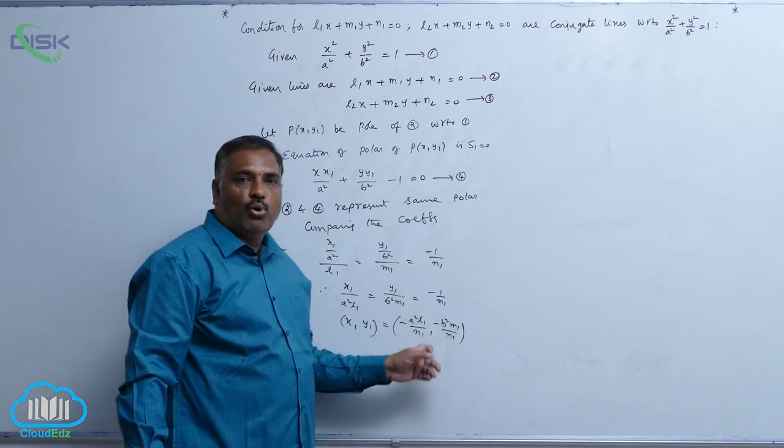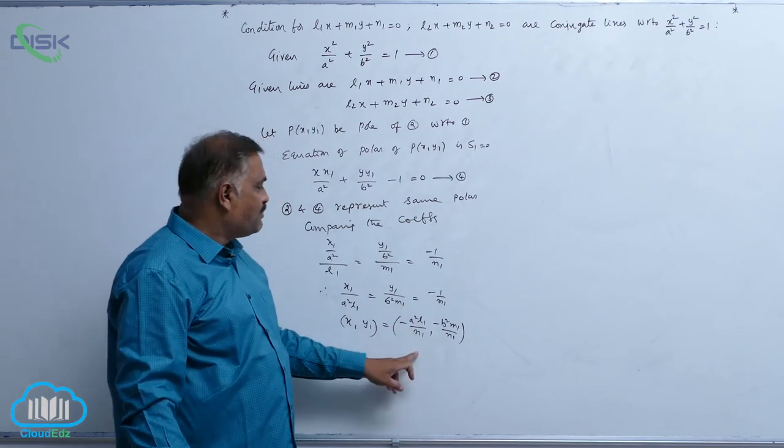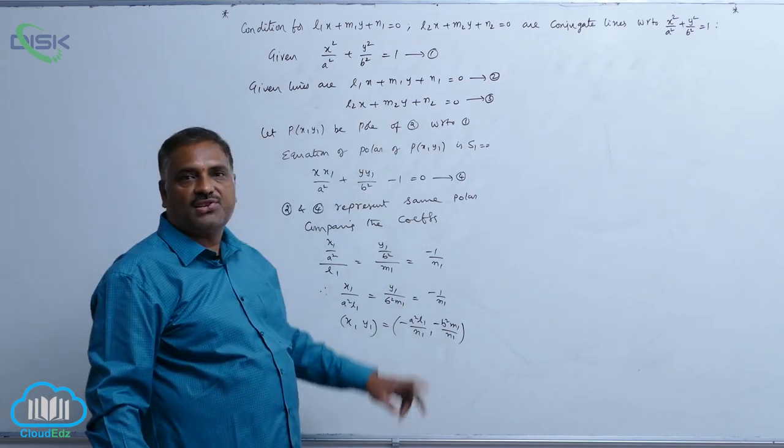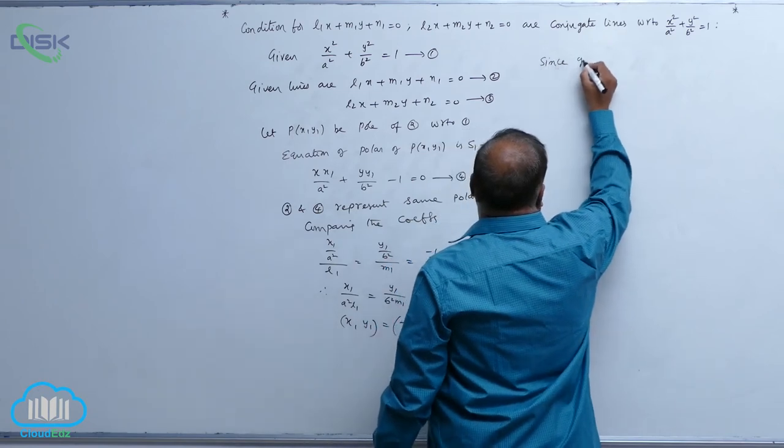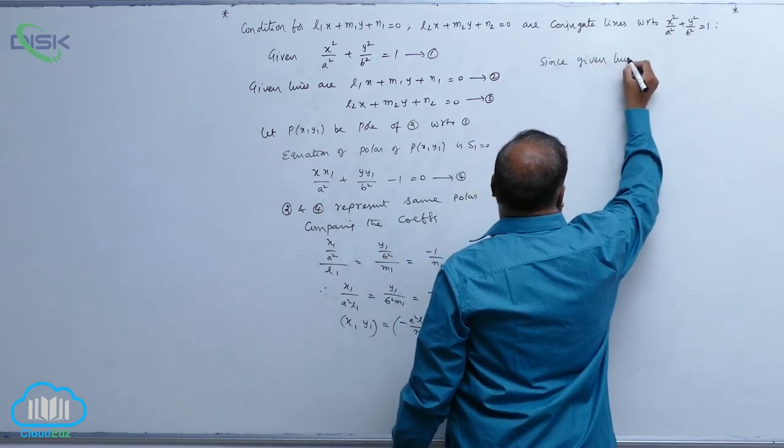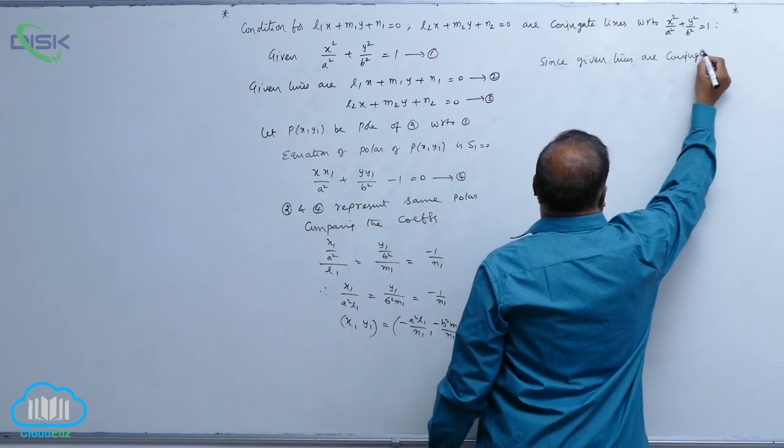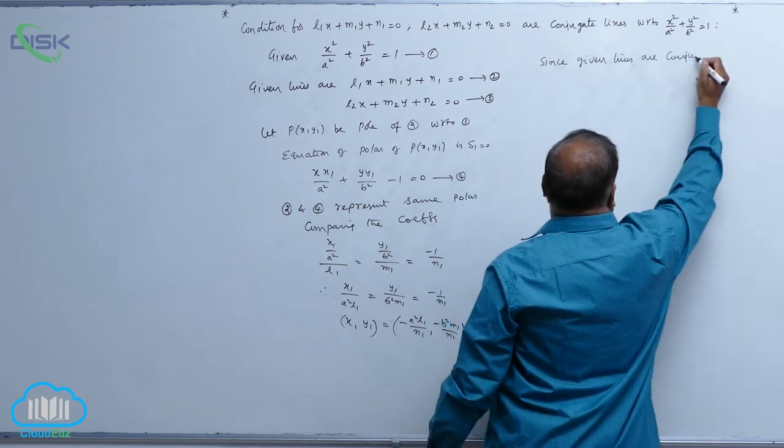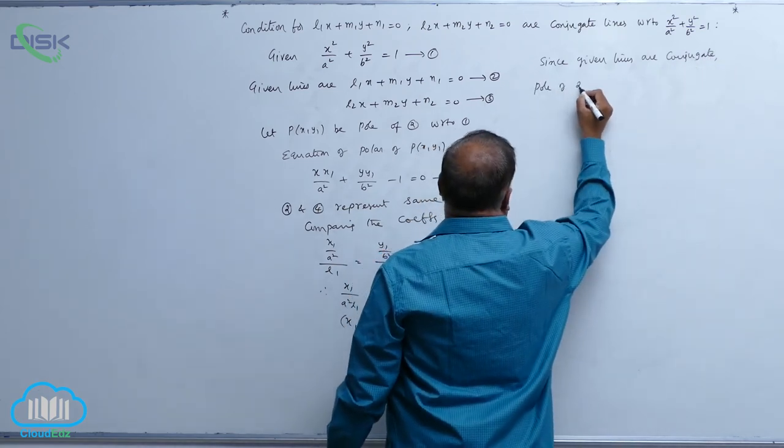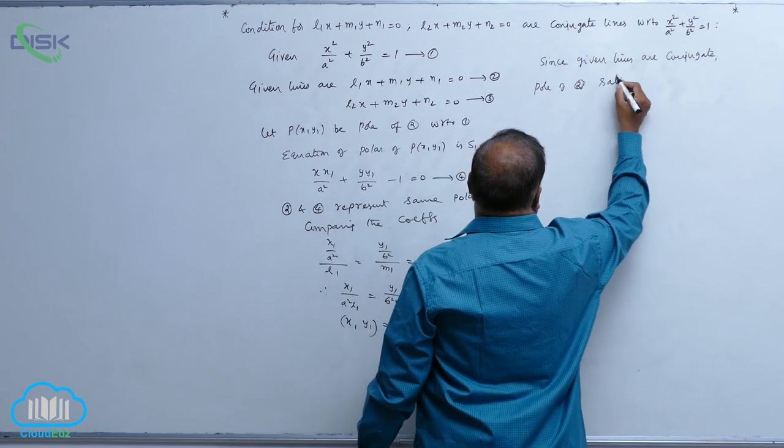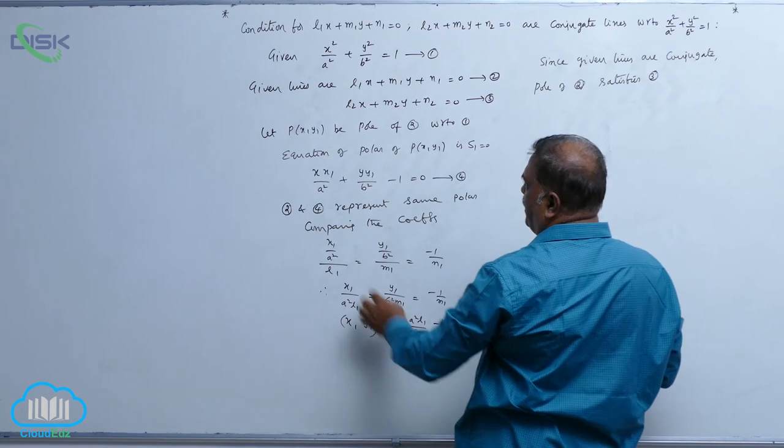This is the pole coordinates. Since the lines are conjugate, this pole satisfies equation number 3. Since given lines are conjugate, you can say pole of 2 satisfies 3. Wherever x and y is there, substitute this point.